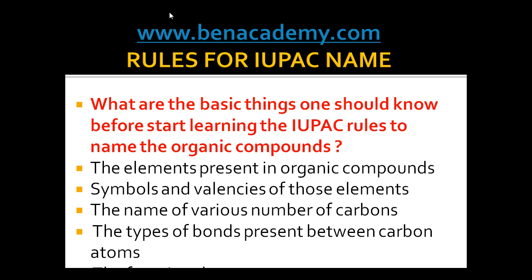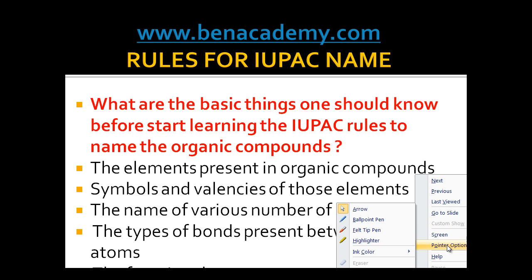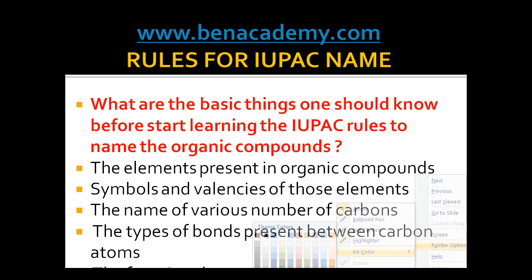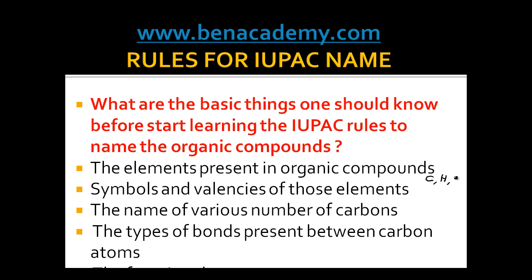What is the IUPAC rule? It stands for International Union of Pure and Applied Chemistry. Wherever you go in this universe, you have to follow the same rules to name any compound. The first basic thing to know is: what elements are present in organic compounds? In general, very few elements are present — they are carbon, hydrogen, oxygen, and halogens. The halogens can be chlorine, bromine, or iodine.